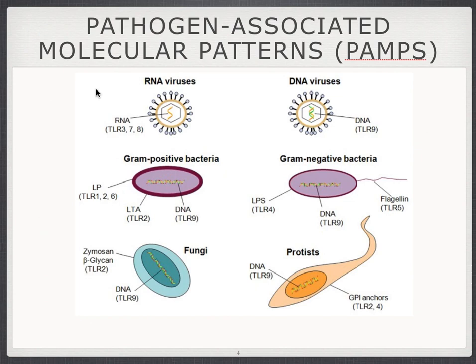Pathogen-associated molecular patterns are molecules that are not present normally in our own bodies and therefore are recognized as foreign by the immune system. That could be RNA or DNA from viruses, or proteins or carbohydrates present on the outside of bacteria, fungi, or parasites — things not present on our own cells, such as flagellin, LPS on the outside of bacteria, beta-glucans, or GPI anchors.